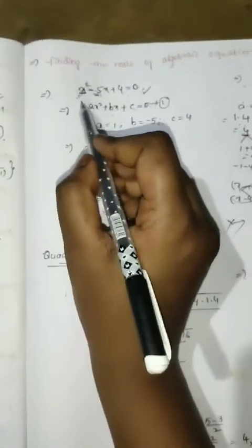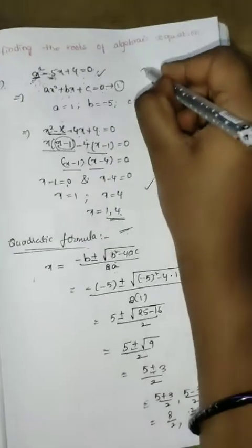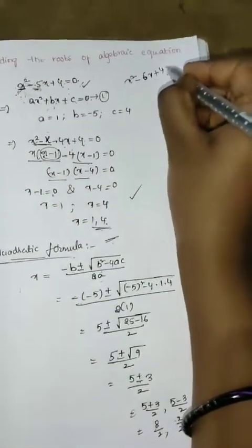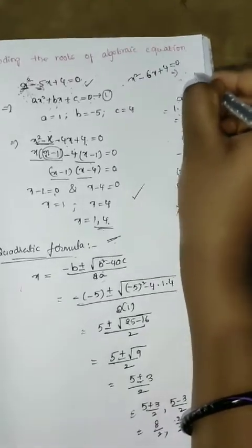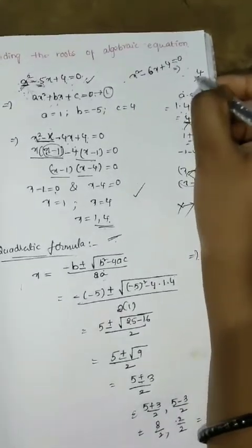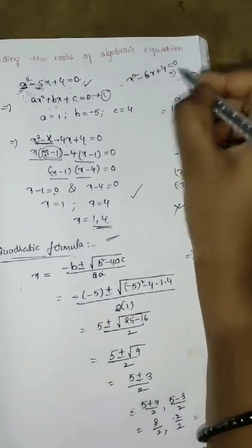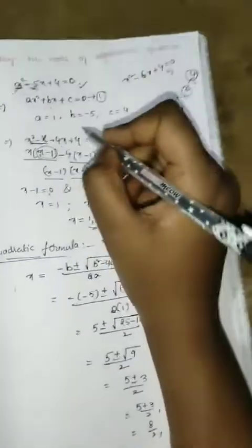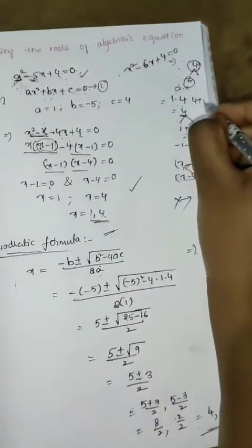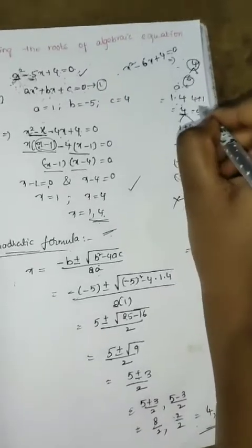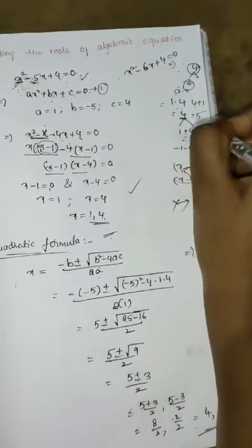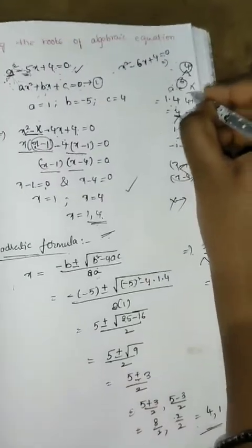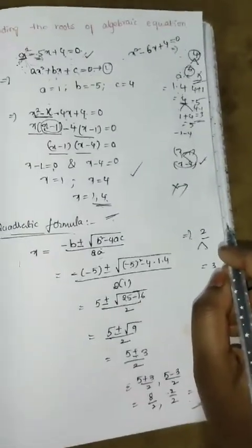For example, consider x squared minus 6x plus 4. Here 1 into 4 is 4, and 4 cannot be written as two numbers that add to 6, since 4 plus 1 is 5, and 4 minus 1 is 3. So factorization may not always work directly.